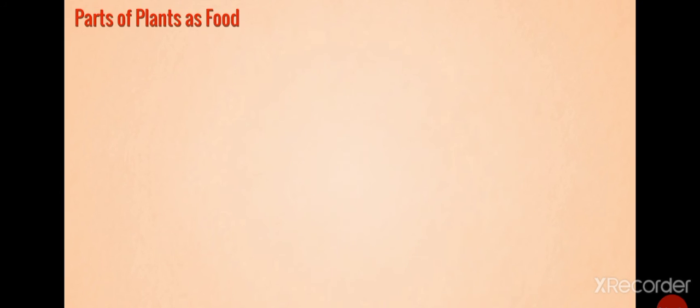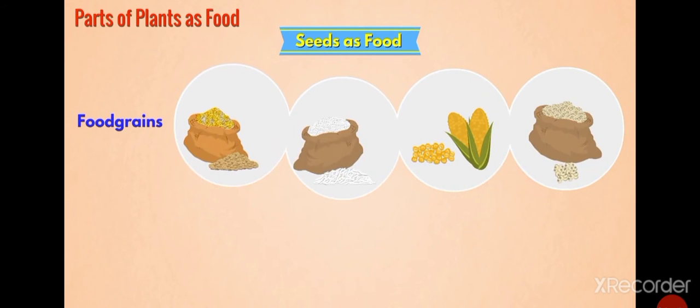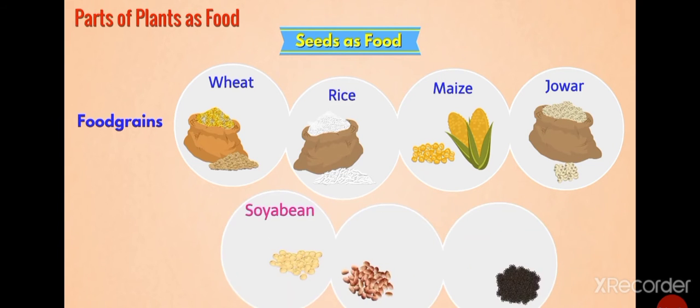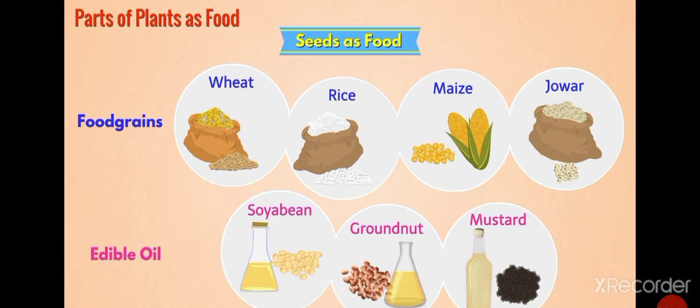Seeds are very important part of our food. Most of the seeds are in the form of food grains. Example, wheat, rice, maize, jowar, etc. From the seeds of plants like soybean, groundnut, mustard, we obtain edible oil.